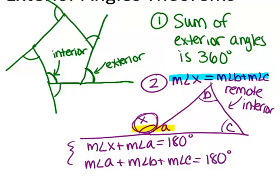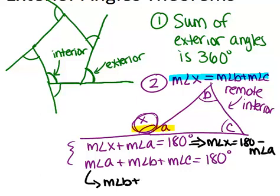So the first equation, when you do that, becomes the measure of angle X equals 180 minus the measure of angle A. When you subtract angle A from both sides, that's what you get. Now for this second equation, if you subtract angle A from both sides, you get the measure of angle B plus the measure of angle C equals 180 minus the measure of angle A.